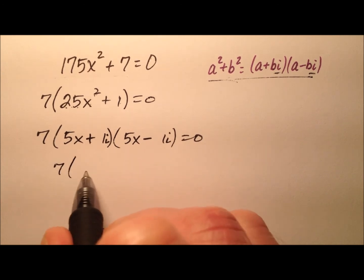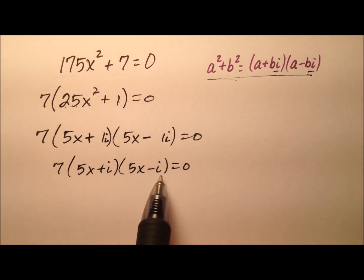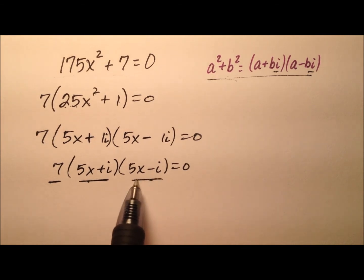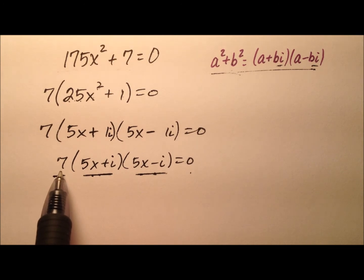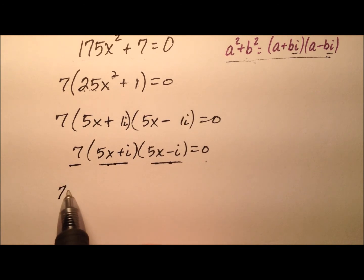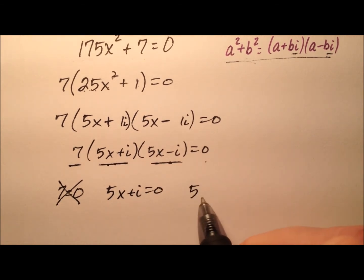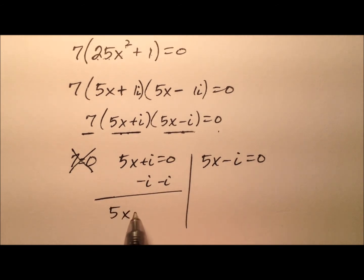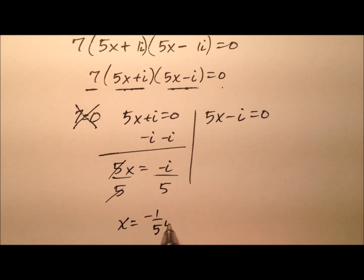So I have 5x plus i and 5x minus i. We have complete factored form. Using the zero property of multiplication, seven can't be zero because there's no variable there, so I can ignore that factor. Setting 5x plus i equals zero and subtracting i from both sides gives 5x equals negative i, and dividing by five gives x equals negative one-fifth i.